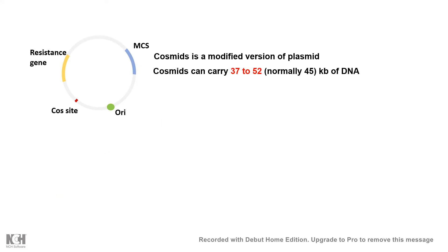Now let's look at the basic features of cosmid vectors. These cosmid vectors are modified plasmids and their carrying capacity ranges from 37 to 52 kb pairs, with a general average size of 45 kb pairs. They have a multiple cloning site with a bunch of restriction enzyme sites where you can insert your gene of interest. They also have an origin of replication for propagation inside bacteria, the cohesive cos site for circularization, and an antibiotic resistance gene for selection of recombinants.